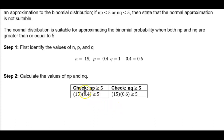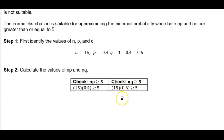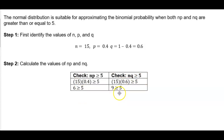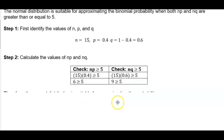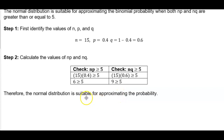n times p is 15 times 0.4 — we want to see if that's greater than or equal to 5. And n times q is 15 times 0.6, which should also be greater than or equal to 5. Well, 15 times 0.4 is 6, and that's greater than or equal to 5. And 15 times 0.6 is 9, and that's also greater than or equal to 5. That tells us that the normal distribution is suitable for approximating the probability.